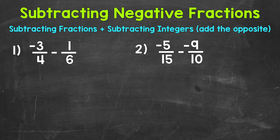Starting with number one, where we have negative three fourths minus one sixth. Now just like when we subtract positive fractions, we need a common denominator. So the least common denominator between four and six is going to be the least common multiple between four and six. We may be able to think of what that least common multiple will be without writing out our lists of multiples for four and six.